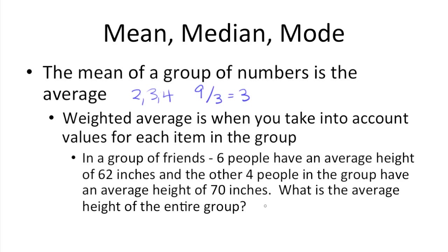So what you would need to do is take the 6 people here and multiply it by the average height of that small group. So you'd have 6 times 62, which is equal to 372. Now you need to take the other 4 people here and multiply it by their average, which is 70. And that gets 280.